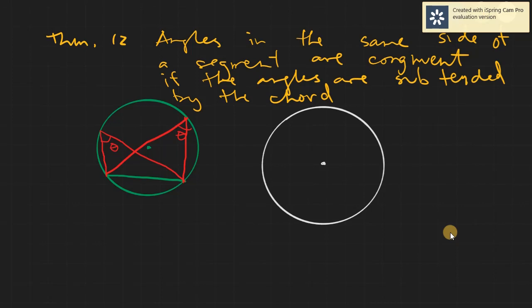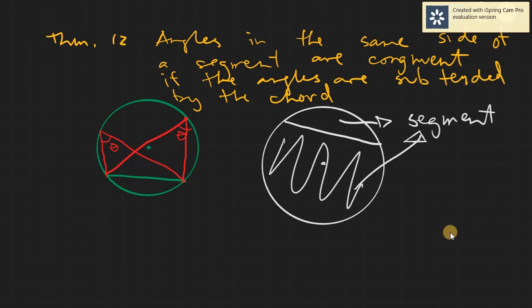So firstly, say we have this figure, the white one. Let's first recall what is a segment. Segment is simply a portion of a circle divided by the chord. So this would be this area here. This area here is a segment, and they are segments.